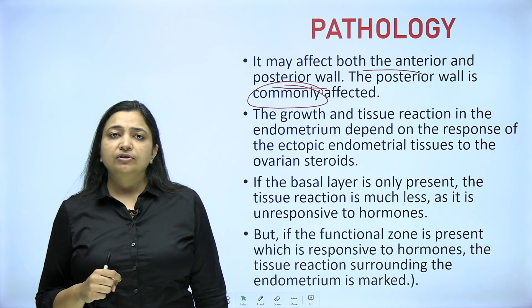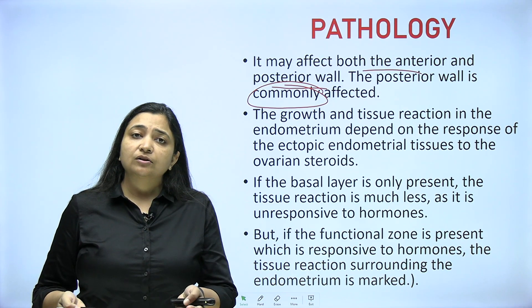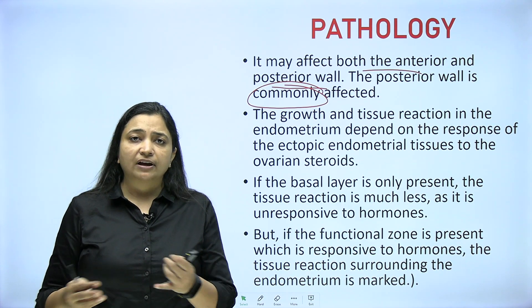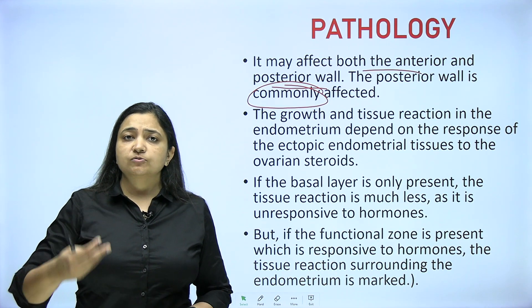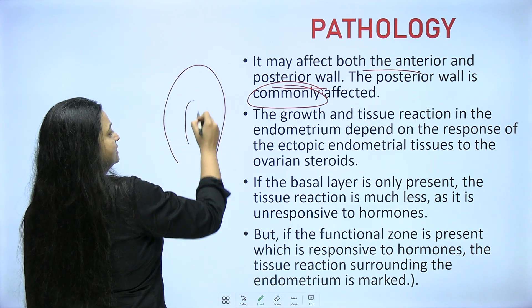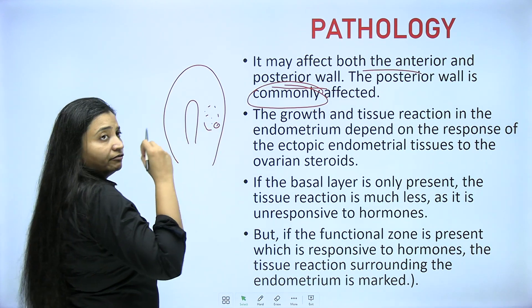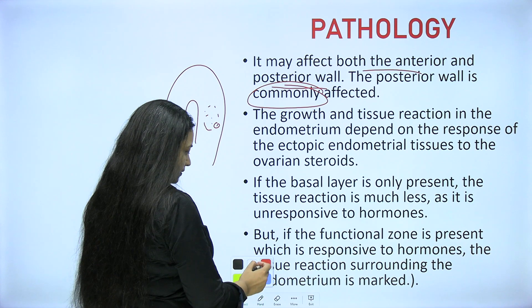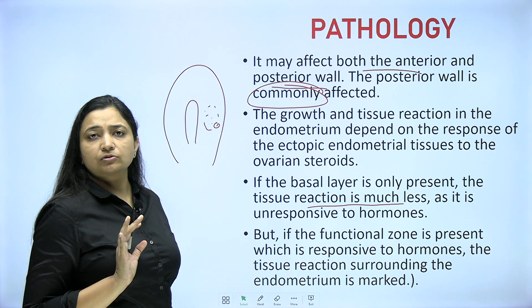In transvaginal sonography, you will always find this posterior wall enhancement. The growth and tissue reaction in the endometrium depends on the response of the ectopic endometrial tissue to ovarian steroids. This is very important — which part of the endometrium has got embedded and how much it is responding to ovarian steroids, meaning estrogen and progesterone. These diseases — fibroid, endometriosis, adenomyosis — are all hormonally dependent and increase with increased hormones. If a functional endometrium is present inside the myometrium, with each menstrual cycle it will keep on bleeding and creating problems. If only the basal layer is embedded, the tissue reaction is much less.